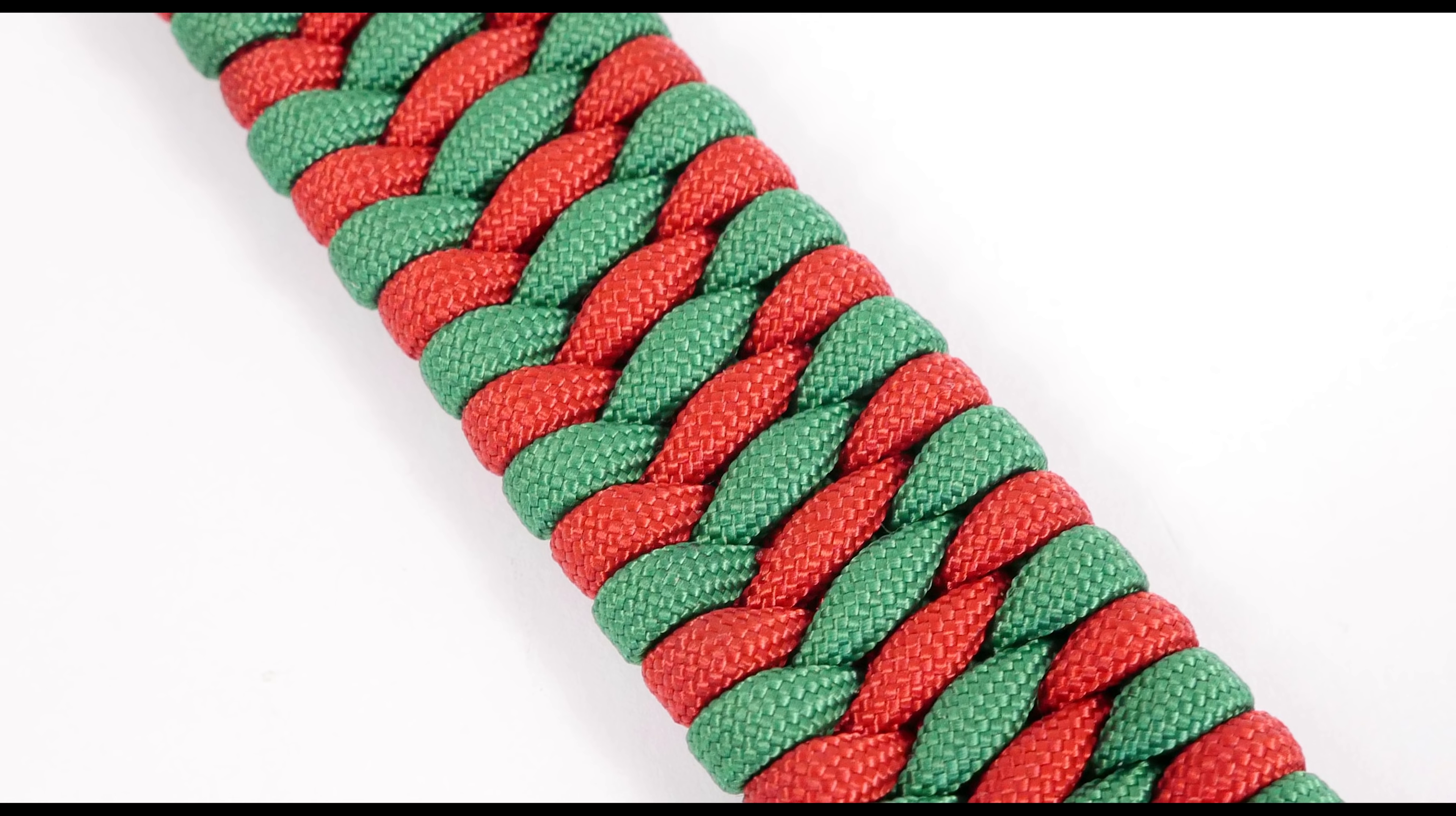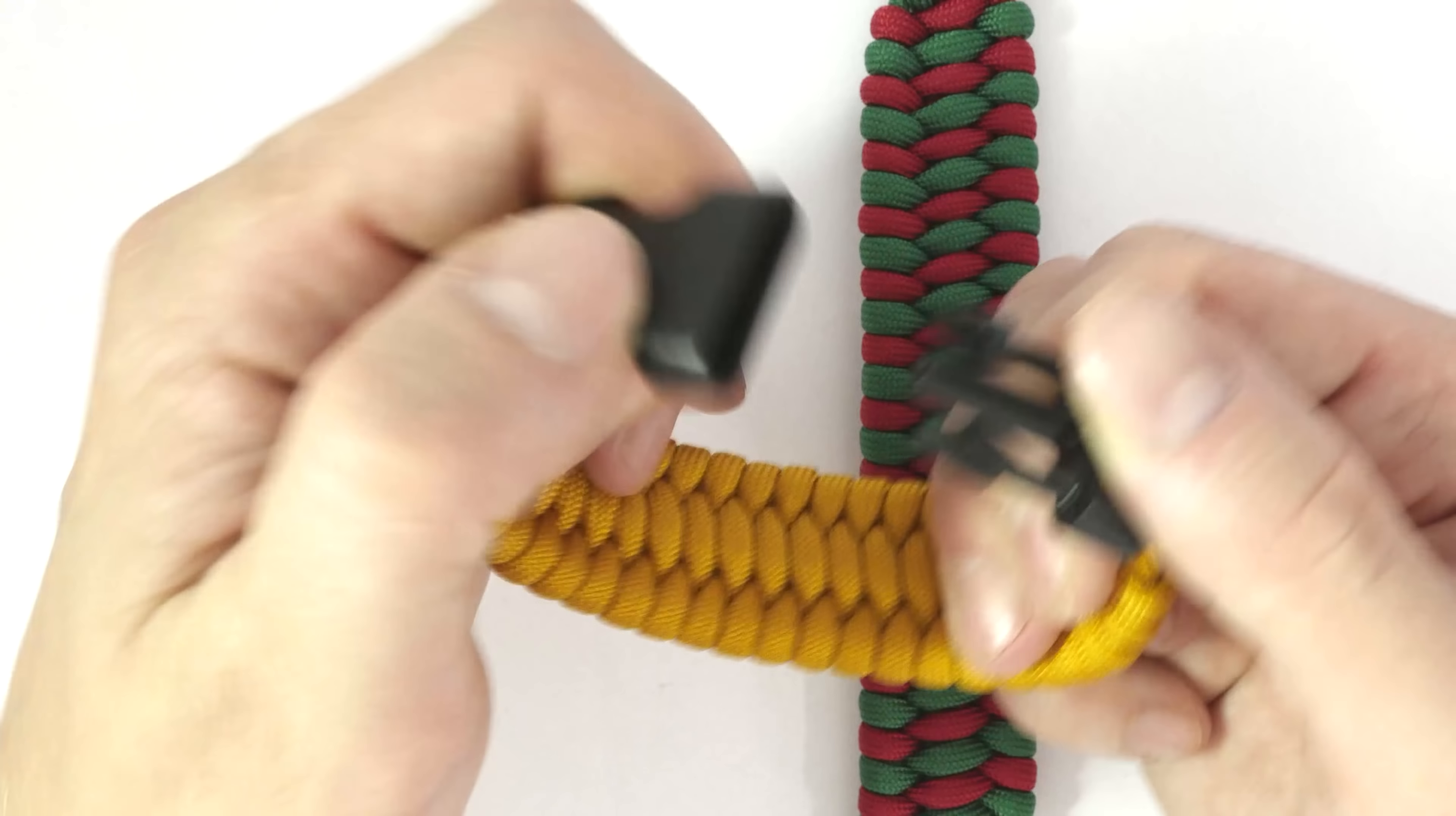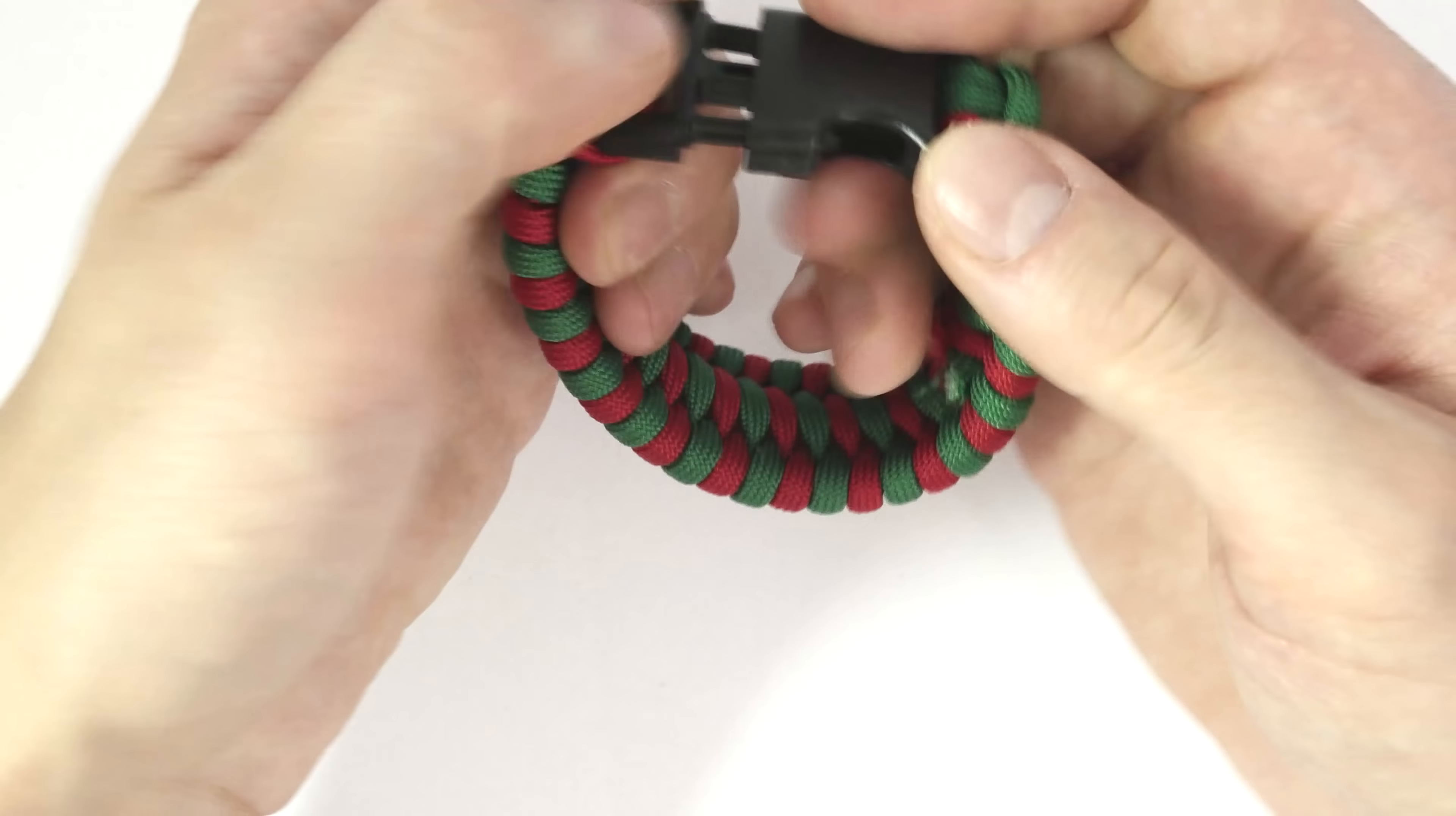This one is also referred to as the ladder rack paracord bracelet. Here you can see two examples of the bracelet, one done in a single tone and a two tone version. This is how it looks like when closed. It is a fairly wide bracelet, but also fairly thin. It saves up quite a bit of cord. And this is how the two tone version looks like.